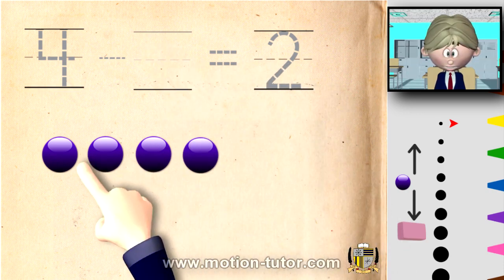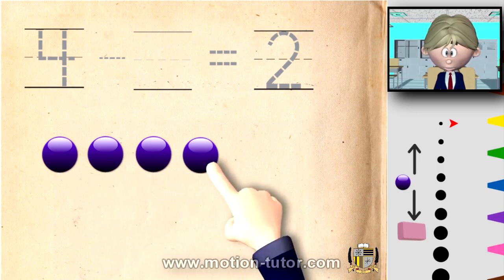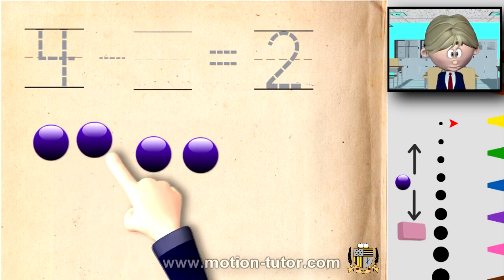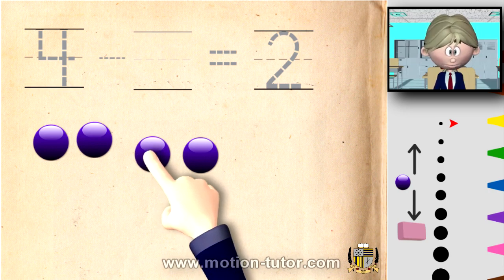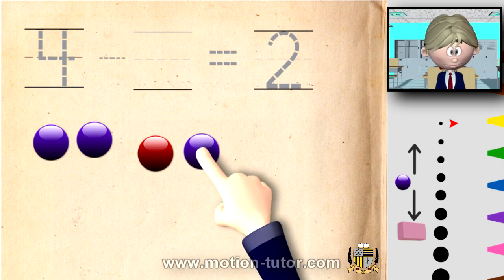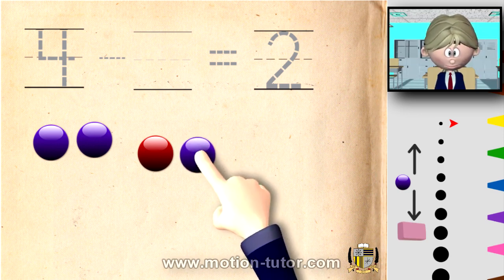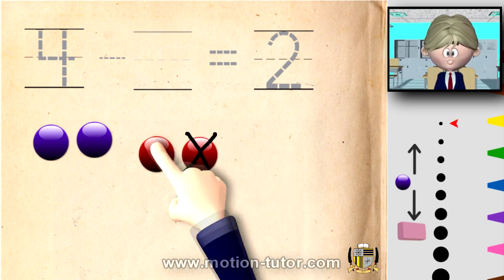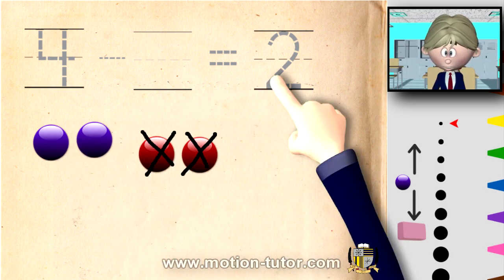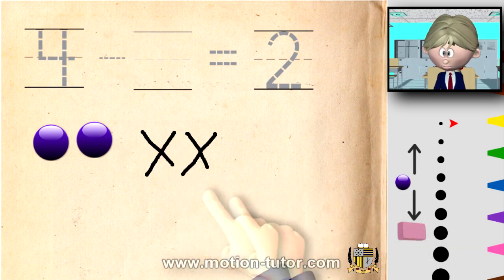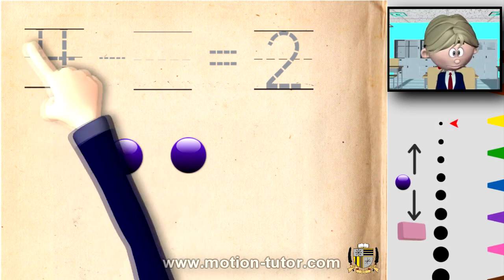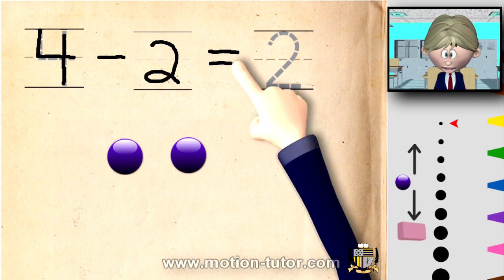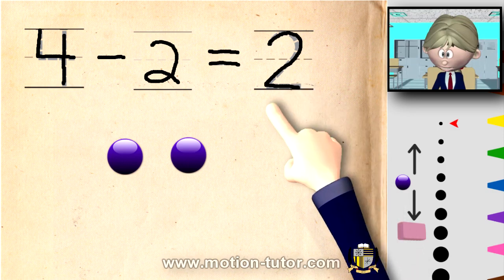We have four and we're going to take away some, and we're going to have two left. So let's say these two will be left over — we have to take these two away so we can have two left over. Four take away the two red ones is equal to two — one, two — the two that's left over.